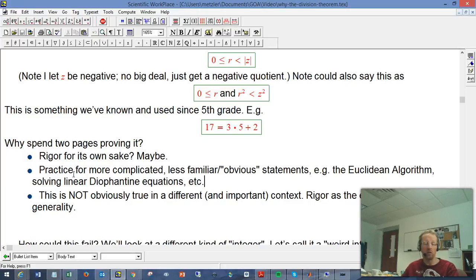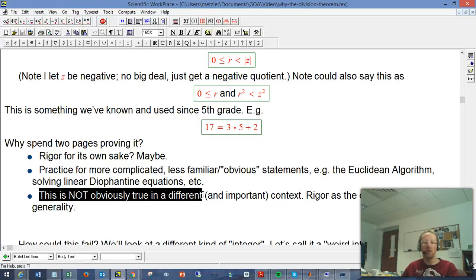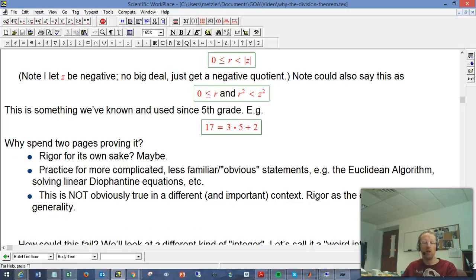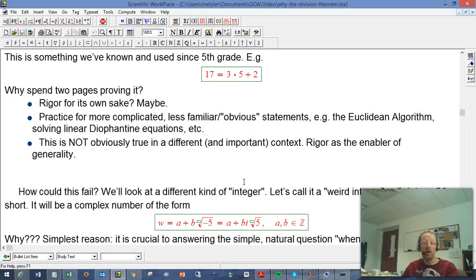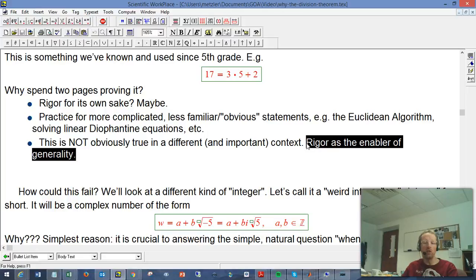The best argument usually for why you would prove a certain result super carefully is: is there a related result, a slight generalization of it, that you don't even know whether it's true or not? It's not remotely obvious and it might not even be true. It's not obviously true in a different context. What I would say is this is rigor as the enabler of generality. The reason you prove things rigorously, especially things that you might think are obvious, is that it tells you how to generalize, and that's power.